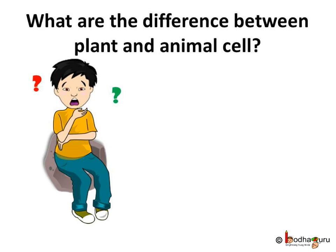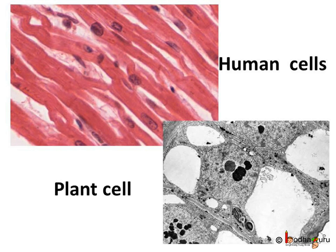Now that we know about the cell, you might think: what are the differences between plant and animal cells? Let us find it out. Both the cells in the human body and the cells of a mango tree are eukaryotic cells, but there are many differences between the plant cell and the animal cell.